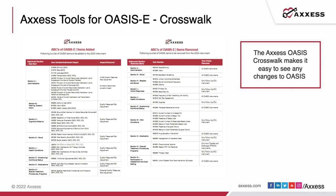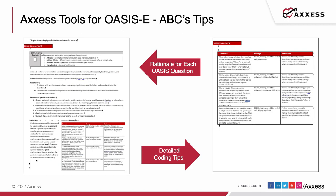On the Access website, you'll see an OASIS E crosswalk that gives you information about the differences between OASIS D1/D and OASIS E — you can download it free of charge, and I would encourage each clinician to have a copy. This is also a sample of the OASIS E tips tool — the guidance manual that CMS has put together, reformatted in a slightly different style. All information is exactly the same but consolidated and easier to use for you and your staff.